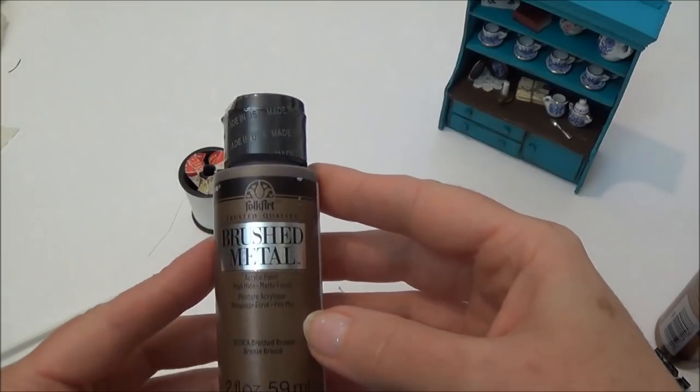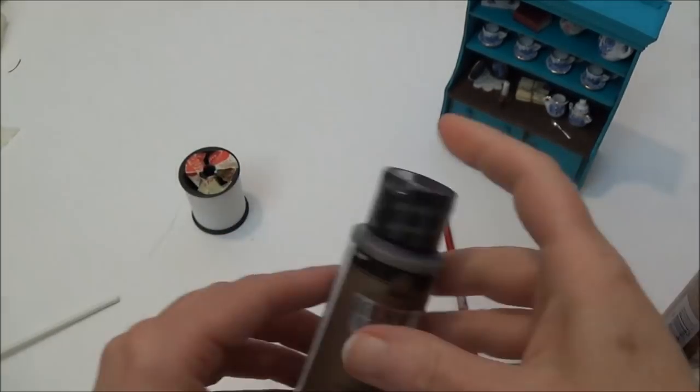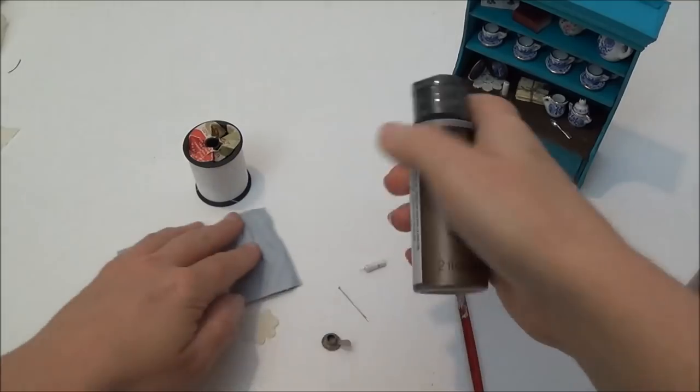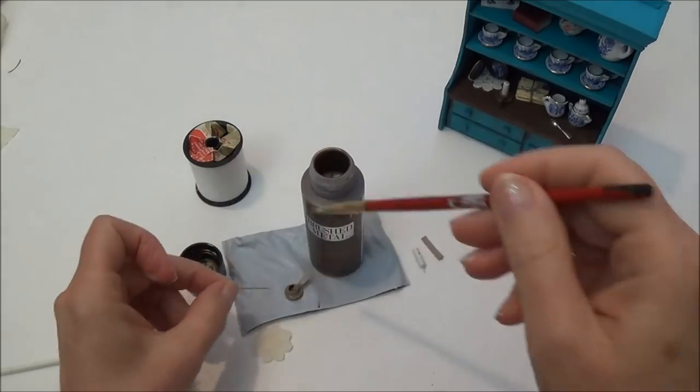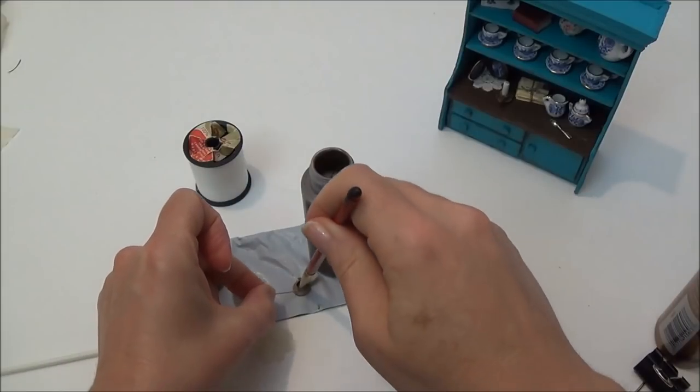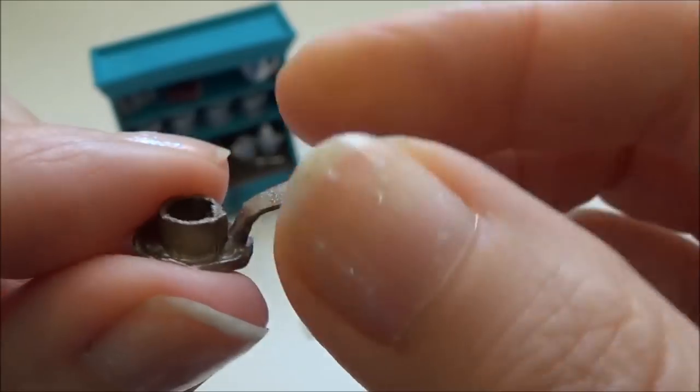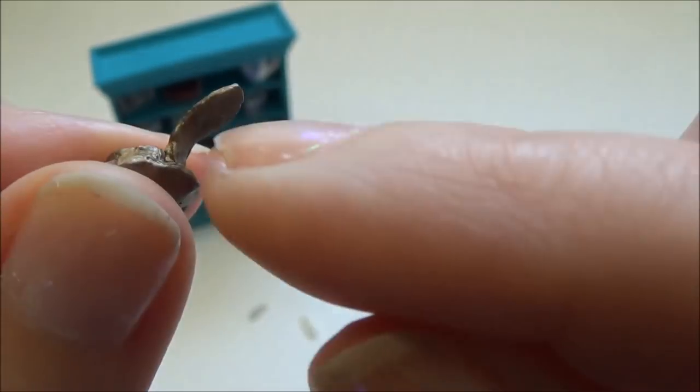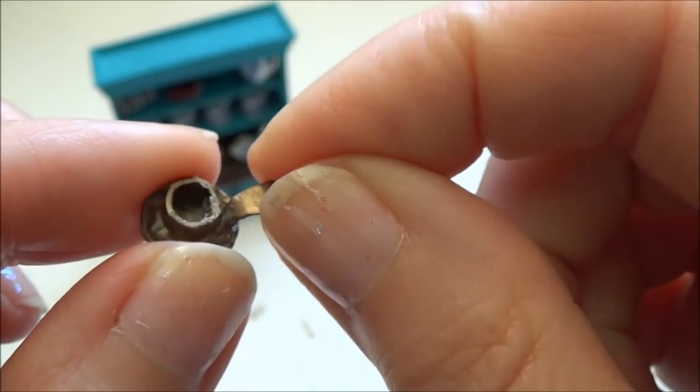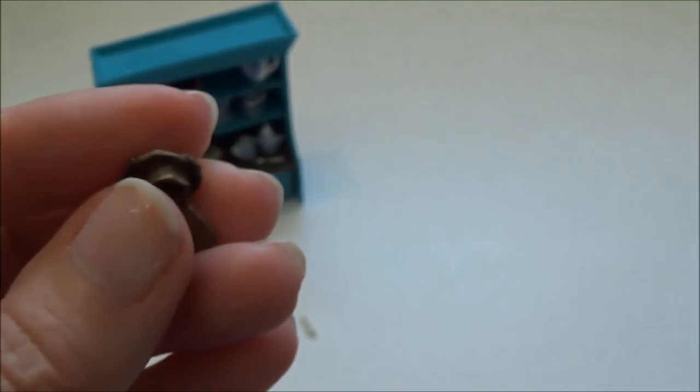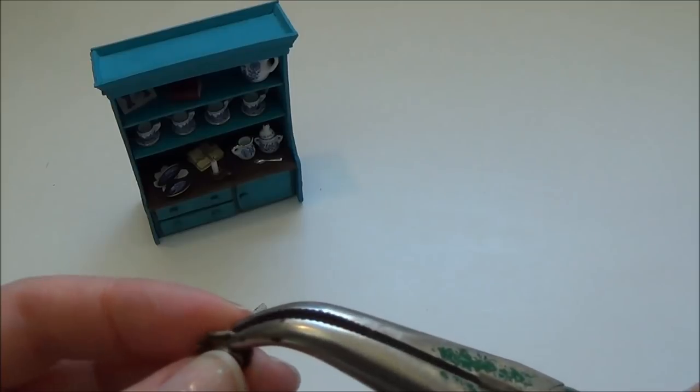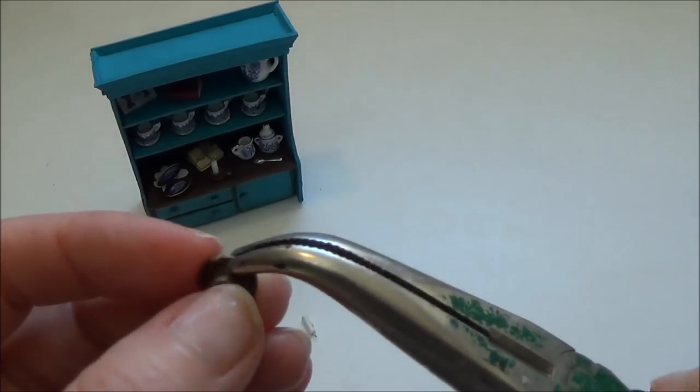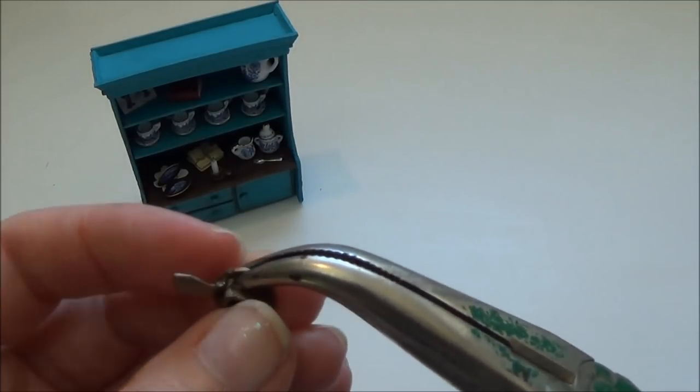So now it's ready to be painted. I'm using a new paint I just picked this up today. It's called Brushed Metal, and it's bronze. I was looking for brass but I couldn't find any, so this will do. I'll do a couple of coats. So once you have it painted, you'll find that it's pretty stiff, especially if you put the glue on the handle like I did. It's actually pretty stiff.